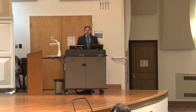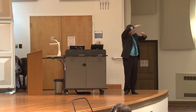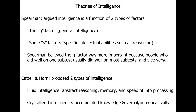Cattell and Horn proposed two types of intelligence. What you see with Spearman is two factors — a general factor and then sub-factors in hierarchical levels. Cattell and Horn propose two types that are related but a little different. Fluid intelligence would be abstract reasoning ability, general ability to use your working memory, and thus speed of information processing — fluidity of information flow in your own mind.